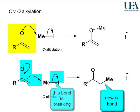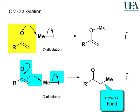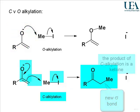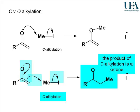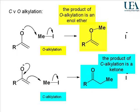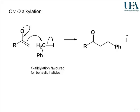In that process, the carbon-iodine bond must break. So the C-alkylation process extends the carbon chain and makes a longer carbon chain, and you get a ketone, whereas the O-alkylation process generates an enol ether.